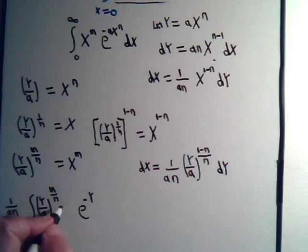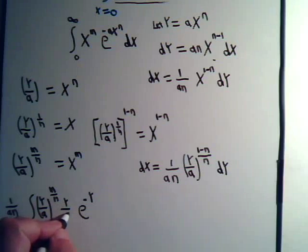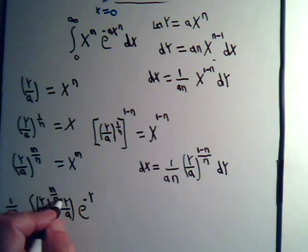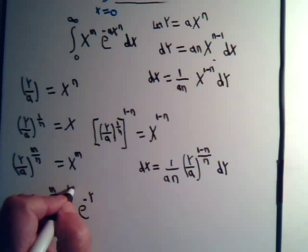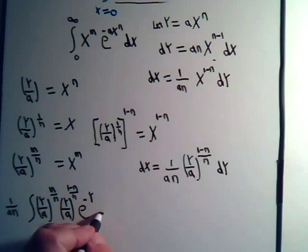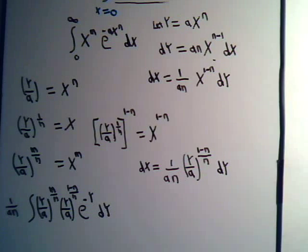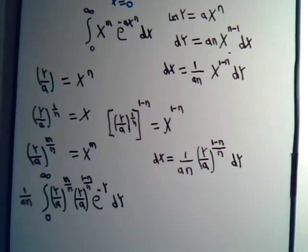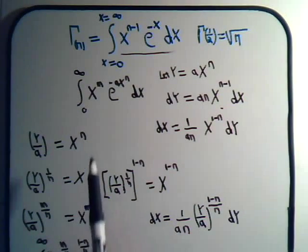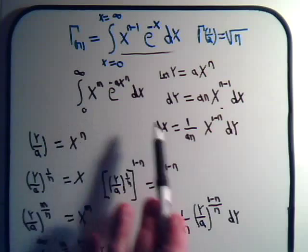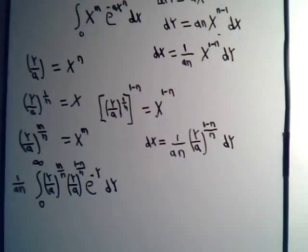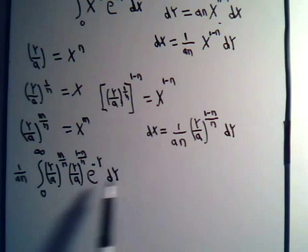And we'll have this to the 1 minus n over n dy. Now everything here is expressed in terms of the variable y and dy. And y goes from 0 to infinity. So we have transformed this integral with our substitutions has now become this integral.